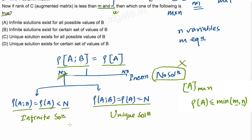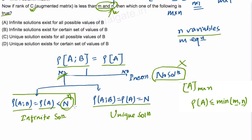We have to find whether we will have infinite or unique solution. The number of variables is n. It is already given that the rank of the augmented matrix is less than both m and n — so it is also less than n. Since the rank is less than the number of variables n, we will have infinitely many solutions, making the first option the correct answer.